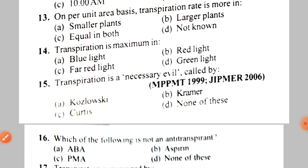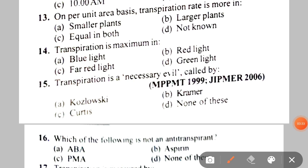Next: on a per unit area basis, transpiration rate is more in A. Smaller plants, B. Larger plants, C. Equal in both, D. Not known. The correct answer is A — smaller plants.